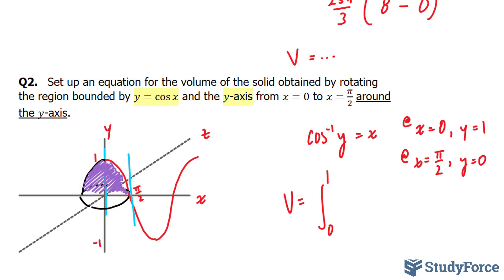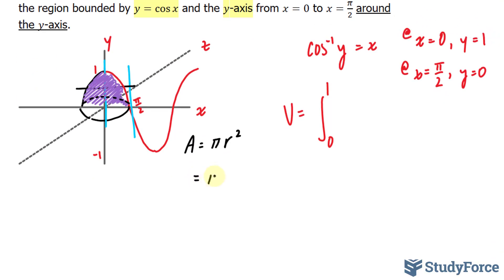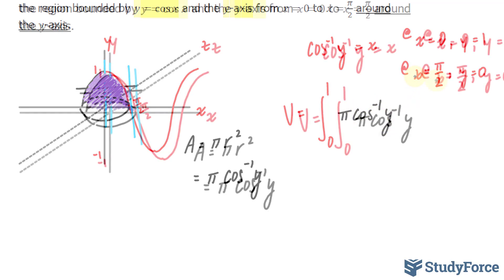If I take a cross-section from here, I end up with a circle, once again, where area is equal to pi r squared. The radius here will represent the function itself. That function is, and remember we wrote it in terms of y, cosine inverse of y. I'm going to substitute this into my integral where I end up with pi cosine inverse of y dy.